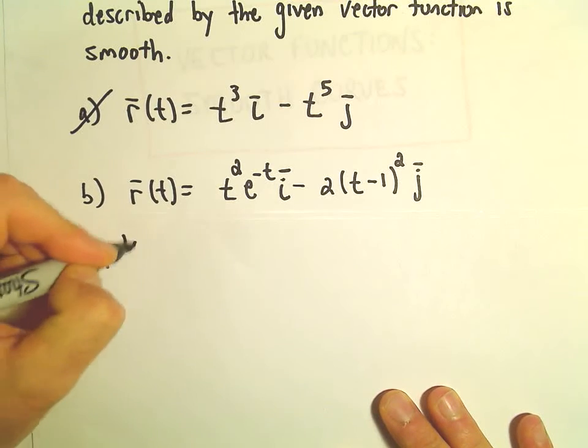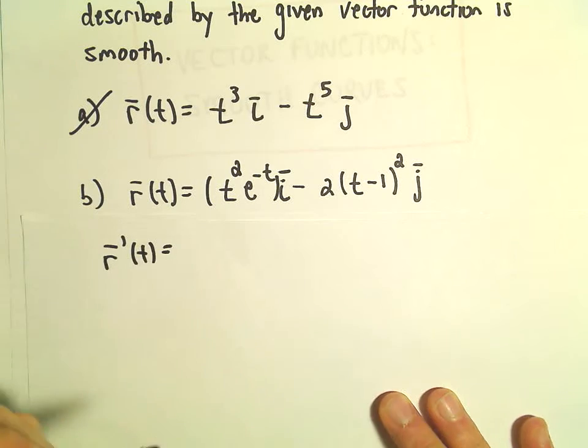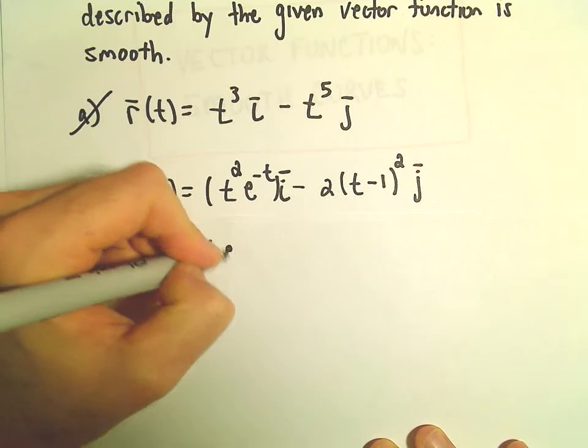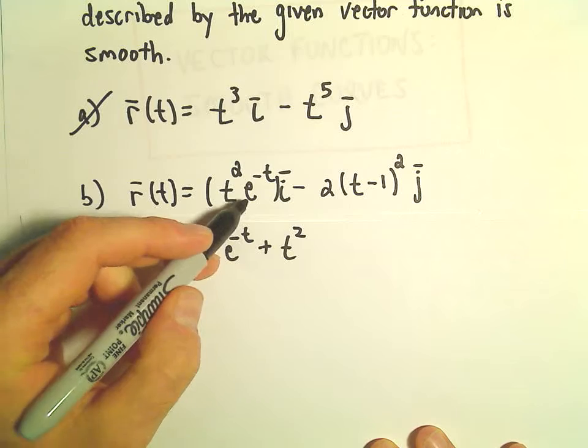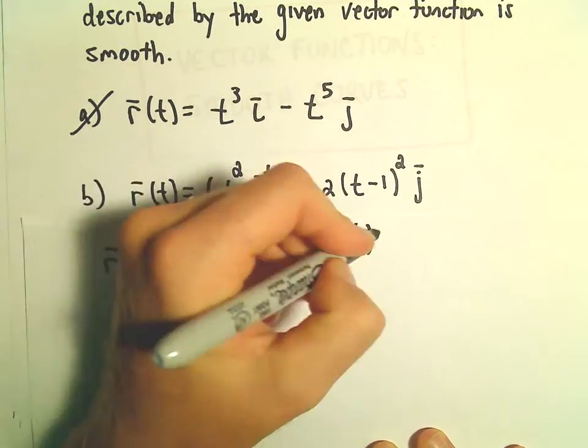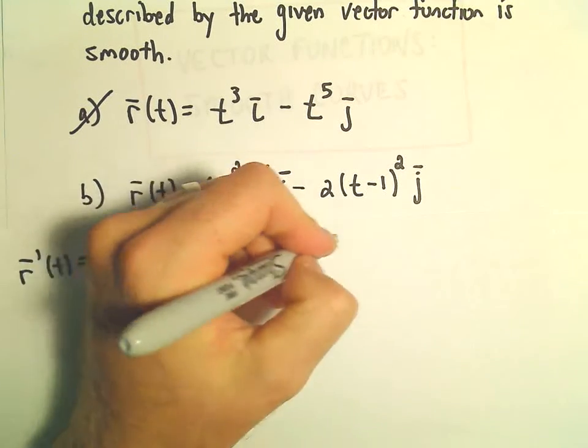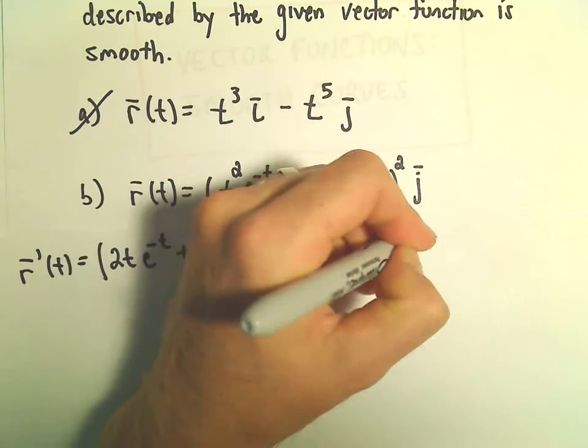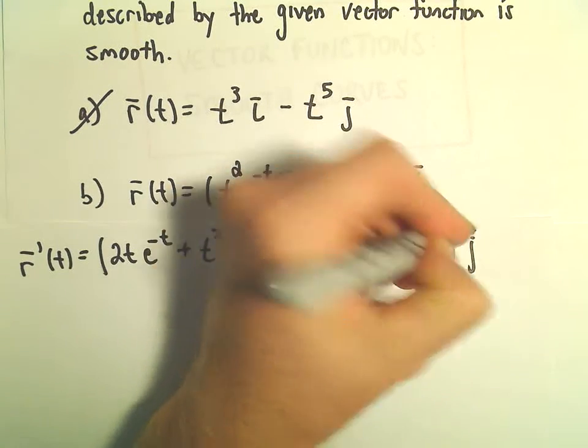Well the first thing I'm going to do is take our derivative. So for the t squared times e to the negative t, I'll have to use the product rule. The derivative of t squared is 2t, we can leave e to the negative t alone, plus we'll leave the t squared alone. The derivative of e to the negative t will be negative e to the negative t. So all of that is multiplied by i. The second part we'll have to use the chain rule. So 2 times 2 will be 4 times t minus 1 to the first. The derivative of the inside is just 1. So then we can multiply all of that by j.